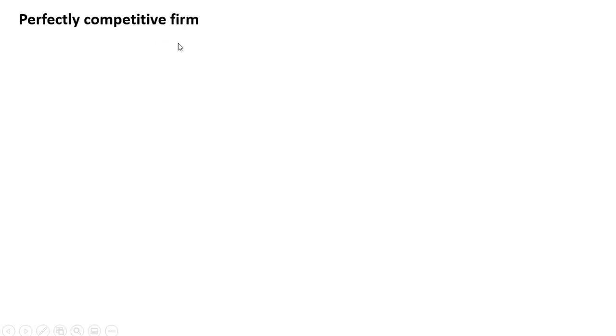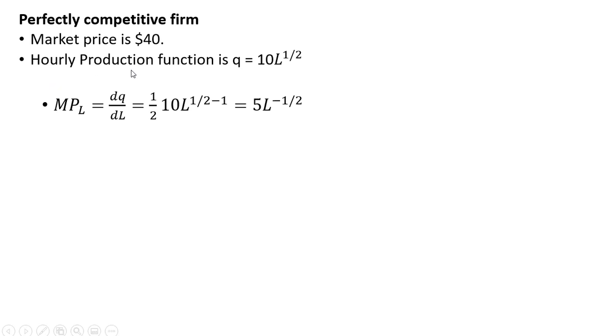We'll start with a perfectly competitive firm. The market price is $40, remember this firm is a price taker. The hourly production function is Q, quantity of output, equals 10 times L units of labor where units of labor is raised to the one-half power.